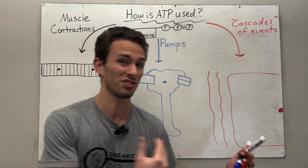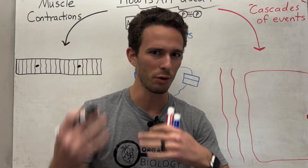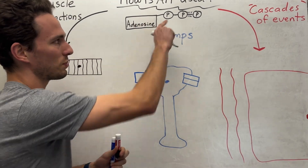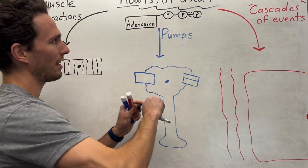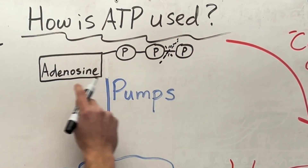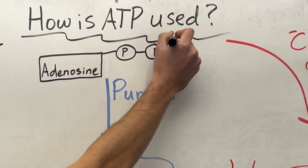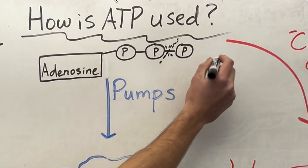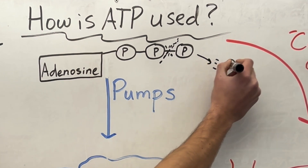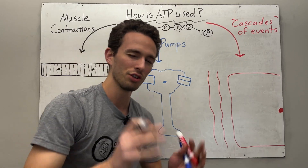So if we do something, it's because our cells are doing something. How do they do these things? They use ATP, and specifically they will cleave the last phosphate off of the ATP, which stands for adenosine triphosphate — three phosphates. When it cleaves that phosphate, it will go flying with a lot of kinetic energy, which is movement energy.